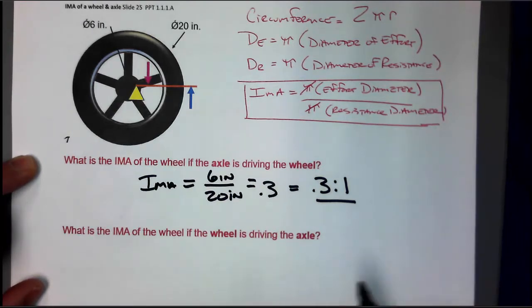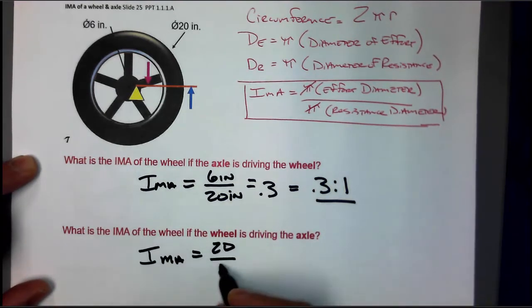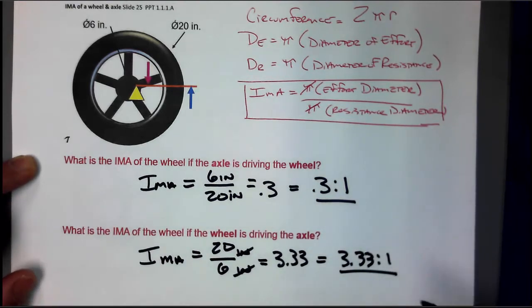What is the IMA of a wheel that's driving an axle? So the IMA, if the wheel is driving the axle, is the opposite.